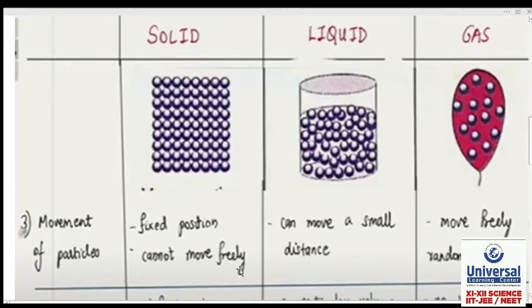Now if you talk about liquids, the particles can move from their position a little. It's not that they cannot move at all - they can move. So I can say, particles can move a small distance. The bottom particle can go up, the top particle can come down - movement can happen.